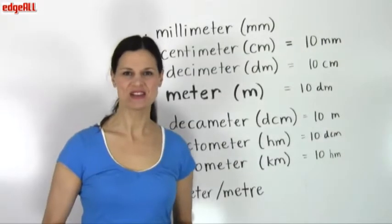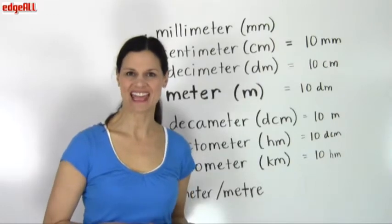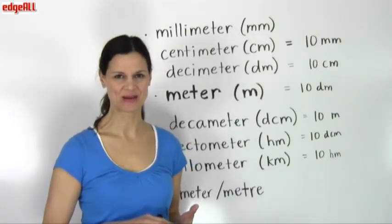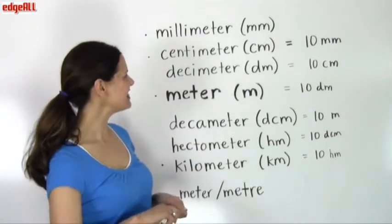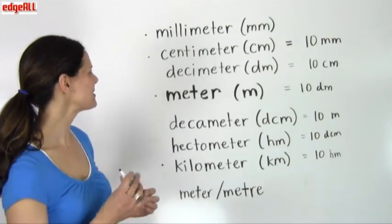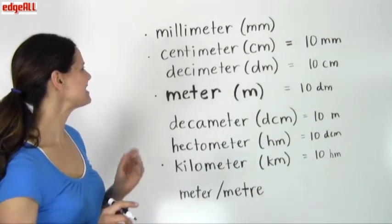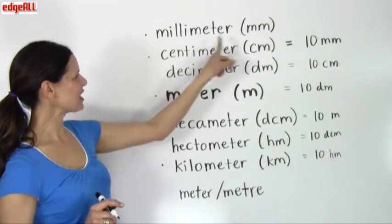In the metric system, the base unit of length is called a meter. So let's look at the length measurement units in the metric system.